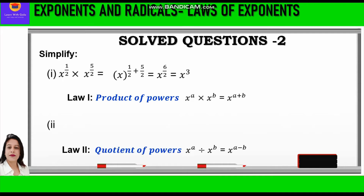Question number 2: x raised to power 6 by 5 upon x raised to power 1 by 5. We write x raised to power 6 by 5 minus 1 by 5, which equals x raised to power 5 by 5, equal to x raised to power 1, equal to x. Here we have applied law 2, quotient of powers: whenever two exponents are divided, we subtract the powers.